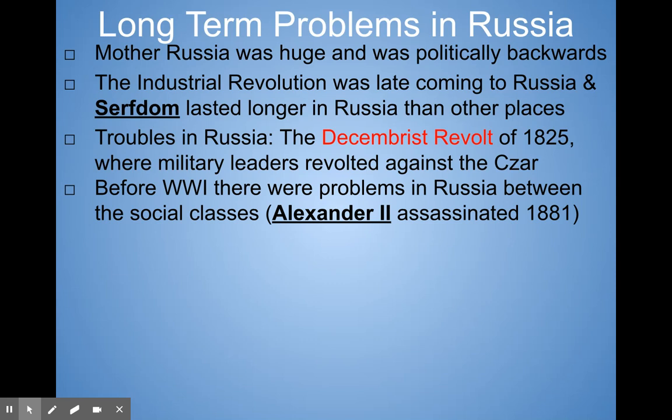Before World War I there were problems in Russia between the social classes. There was a czar, Alexander II, who was assassinated in 1881. So in the 1800s we can feel that there's some tension mounting. Nothing happens just overnight — there are always long-term problems. The Russian Revolution happens during World War I, specifically in 1917, right in the middle of the war. What I'm doing right now is laying important backdrop — a technique we call contextualization, giving you the essential background information you need to understand why there's a revolution in Russia.